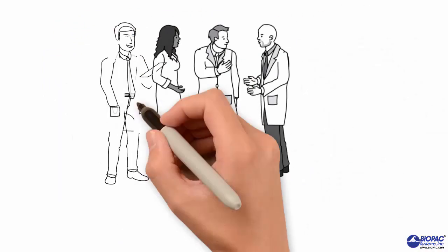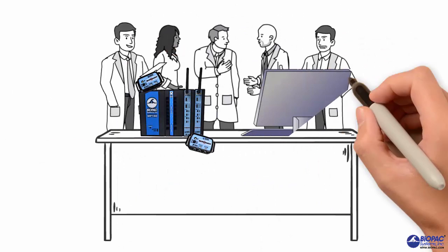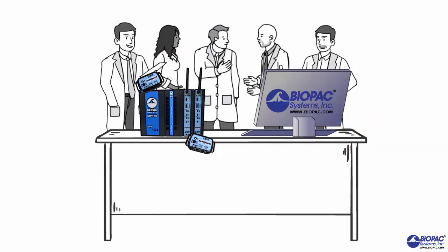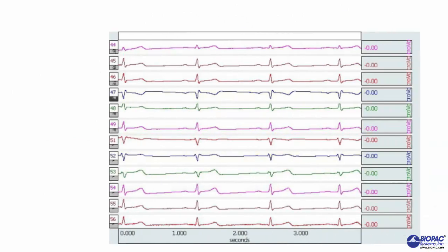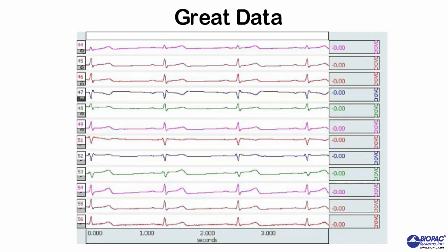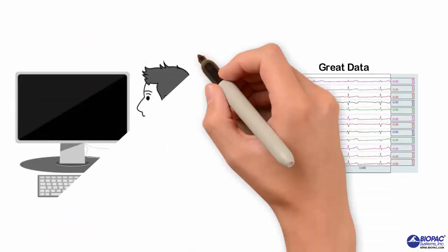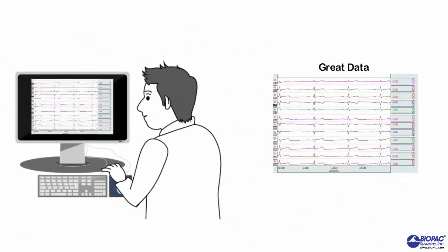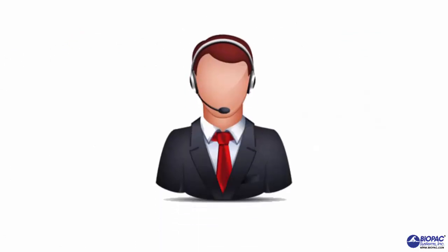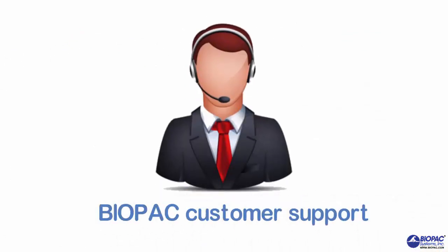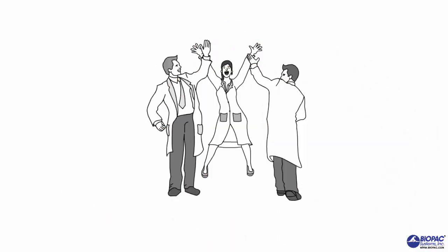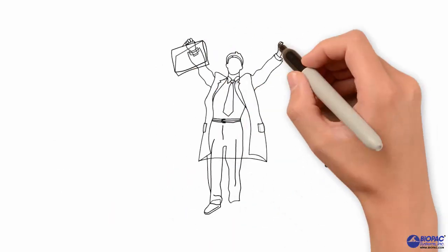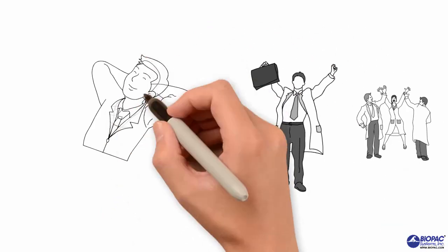Now John and the research team have their new Biopac system. The equipment was easy to set up — modules just snapped together. They are getting great data, and the software is easy to use and automates all kinds of tasks that used to take the researchers forever. Biopac customer support is ready if they have questions. Now the research team is happy, the principal investigator is happy, and John is happy.